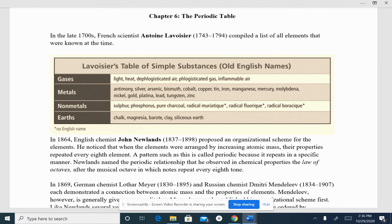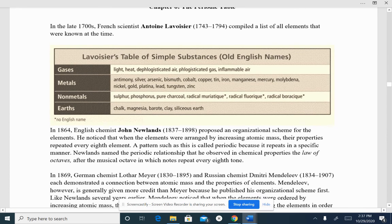Metals, we had antimony, silver, arsenic, bismuth, cobalt, copper. Some of those sound pretty similar. Nonmetals: sulfur, phosphorus, pure charcoal, radical muritanic, radical fluoricanic. And then earths, we had chalk, magnesia, borate, clay, silica, earth. So a lot of those don't sound like elements that we have today. You can see some of the elements, but you'll notice that a lot of the things that we have are way different.